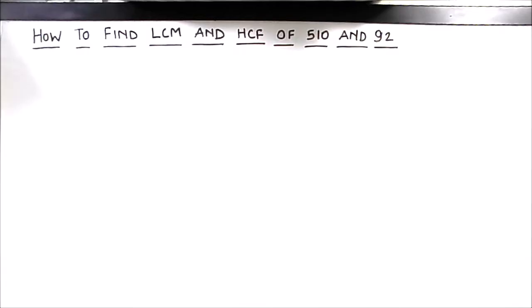In this method we find factors of the number by dividing it by prime factors, and then after finding the factors we are going to write the numbers as a product of their prime factors and we will find the LCM and HCF. Let us first find the prime factors of 510.